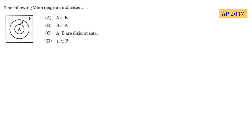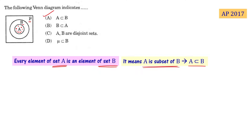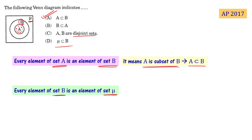The following Venn diagram shows set A completely inside set B, which is inside μ. Every element of set A is an element of set B, so A is a subset of B. Also, every element of B is an element of μ, so B is a subset of μ. The correct choice is 'A is a subset of B.'